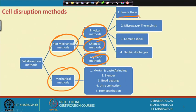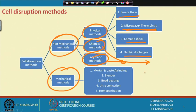Physical methods include freeze-thaw — where cells are frozen then thawed so they burst — microwave, thermolysis, and osmotic shock, which causes cell breakage. Electric discharge also causes breaking of cells. For enzymatic methods, lysozyme is used for breaking cells. For chemical methods, buffers are used for breaking the cell wall. Mechanical methods include mortar and pestle or grinding, blender, bead beating, ultrasonication, and homogenization.